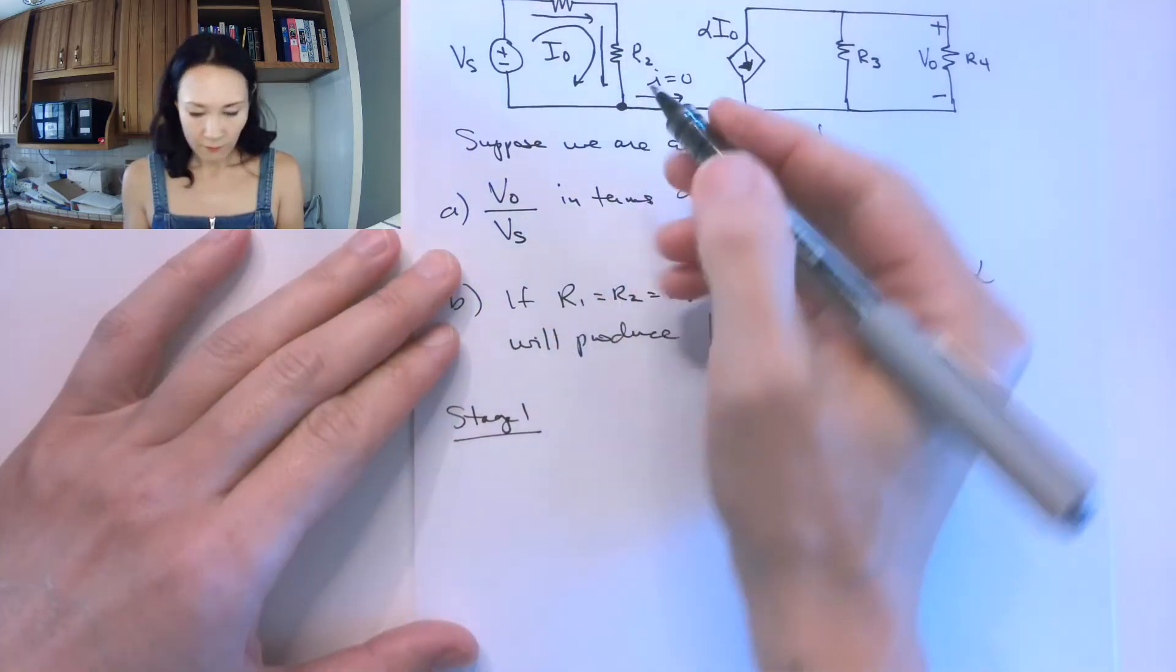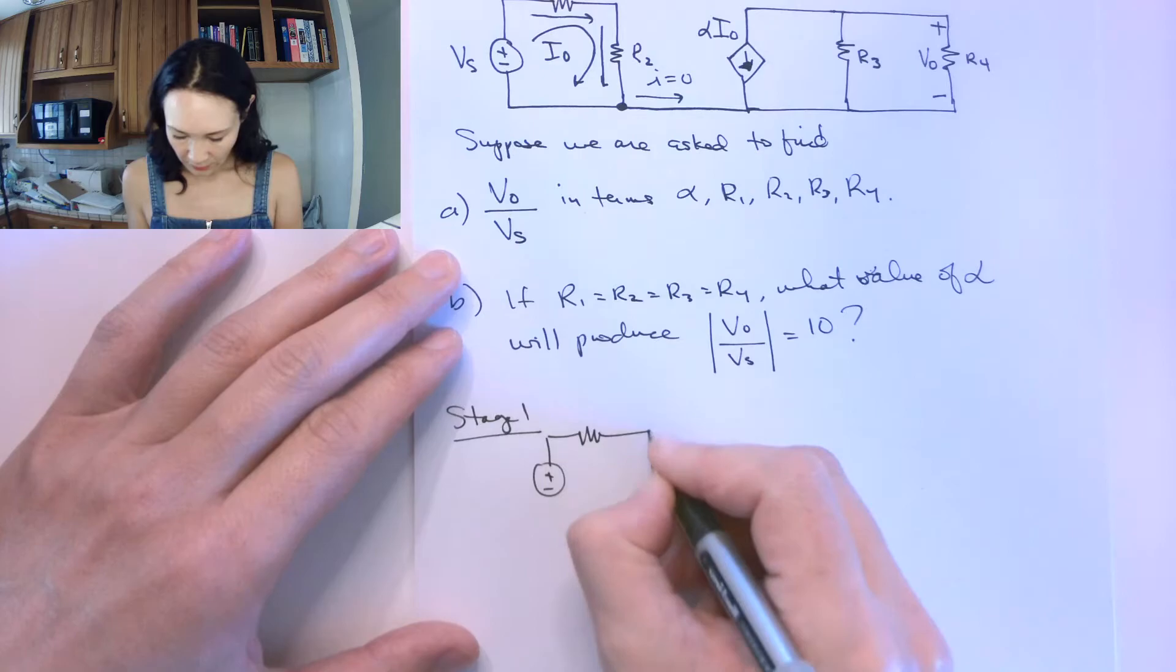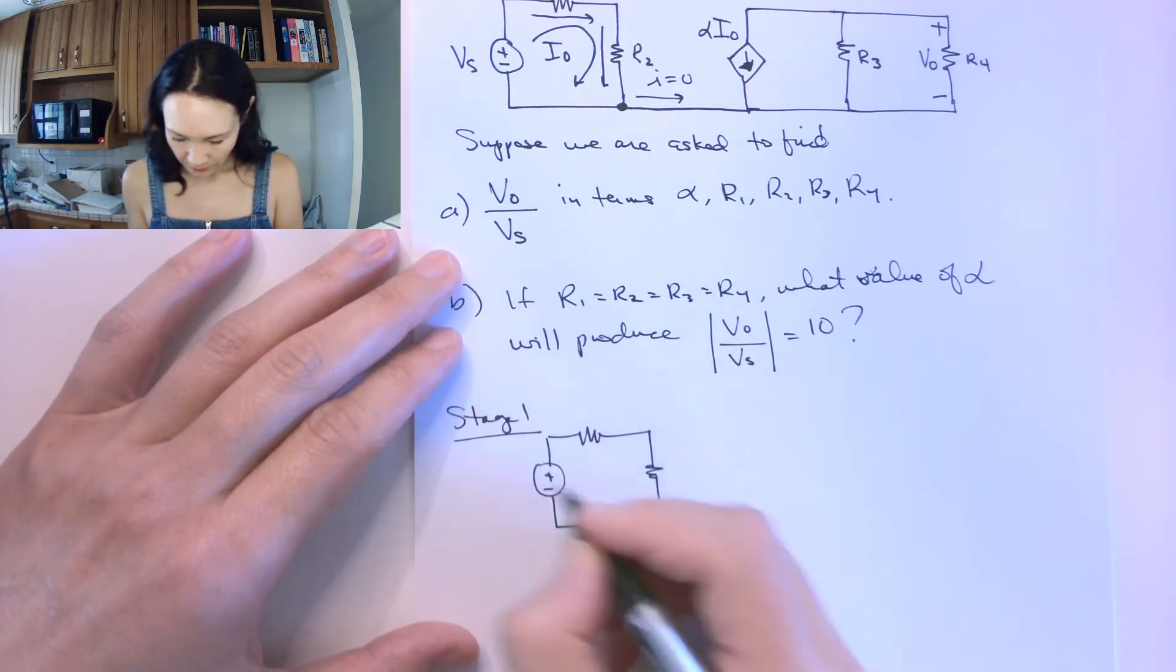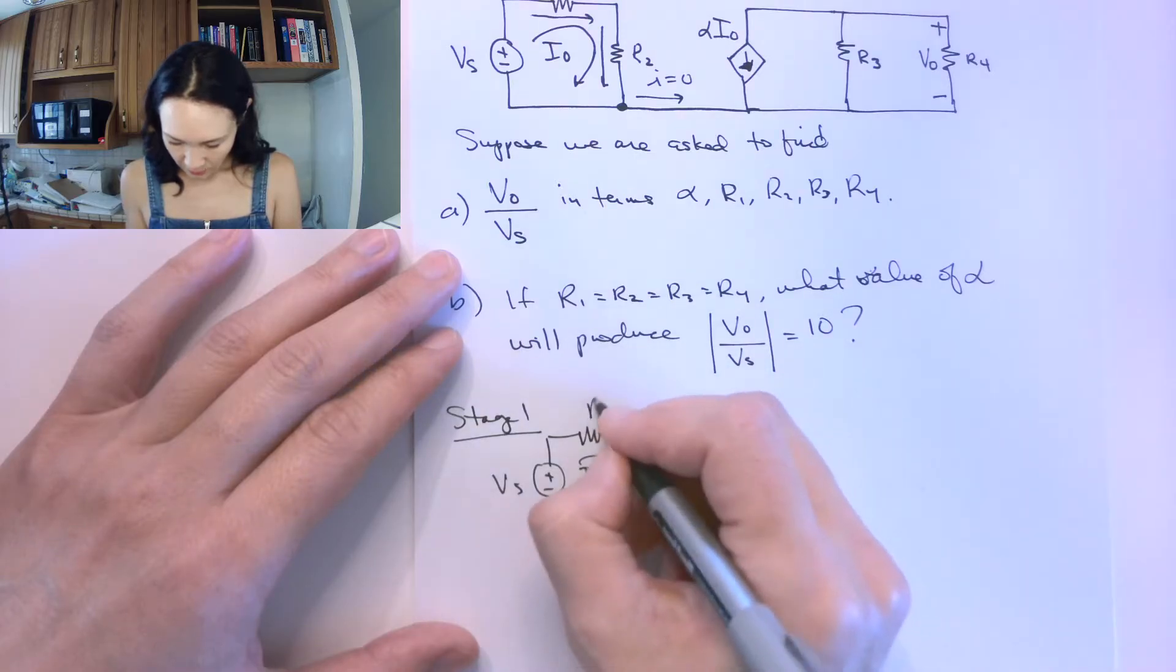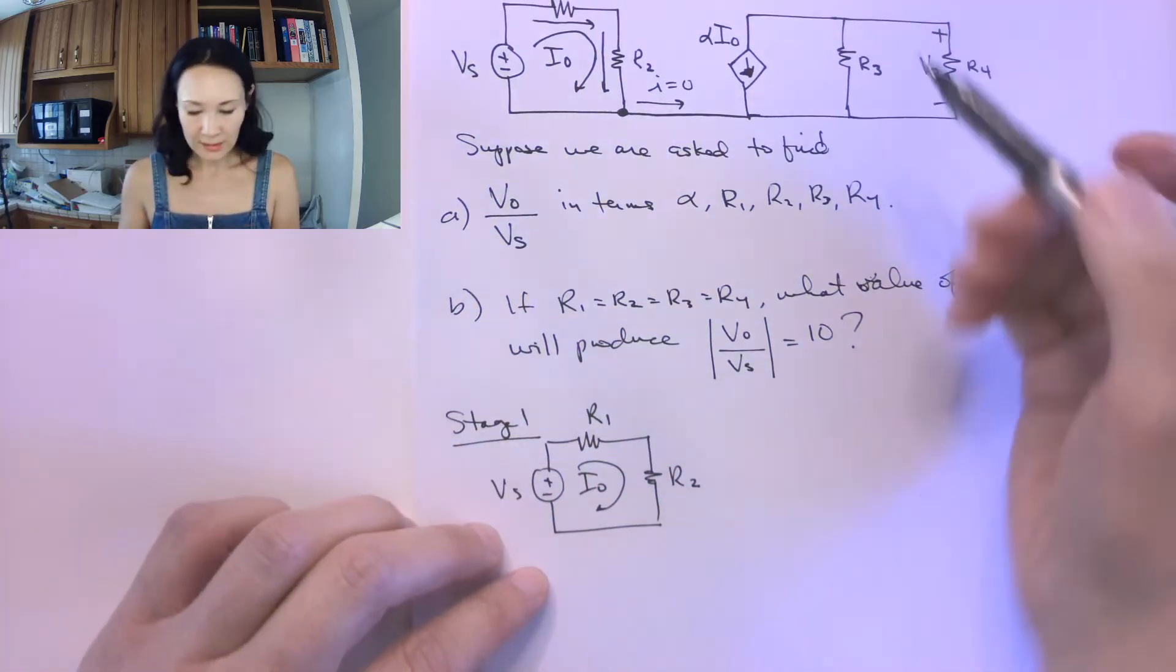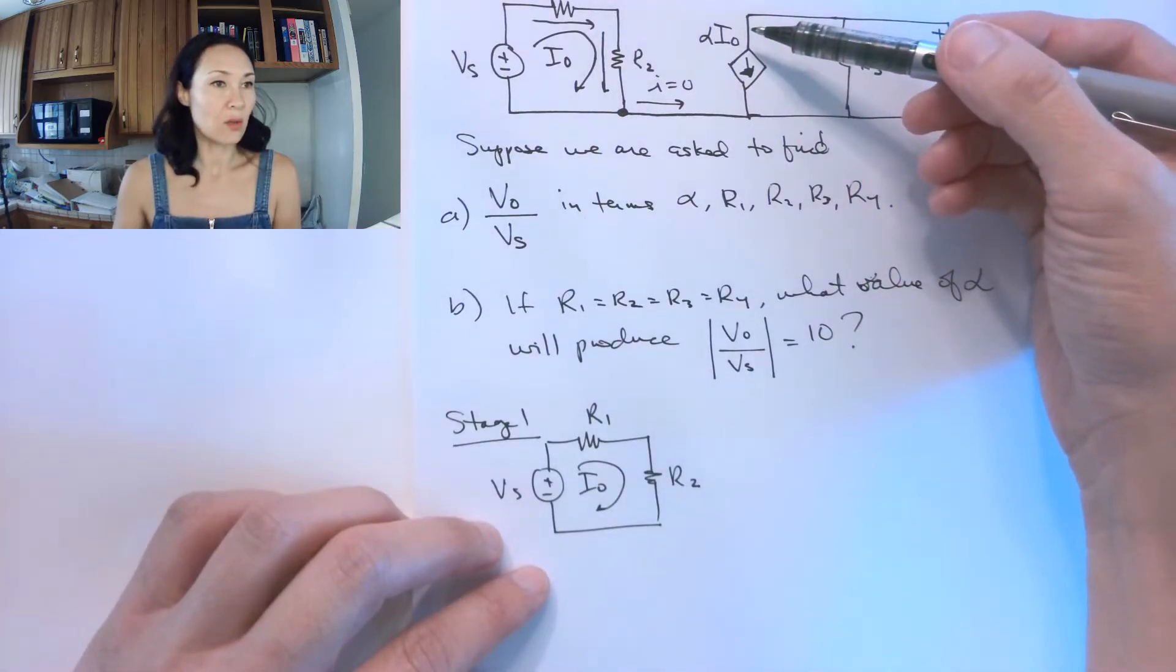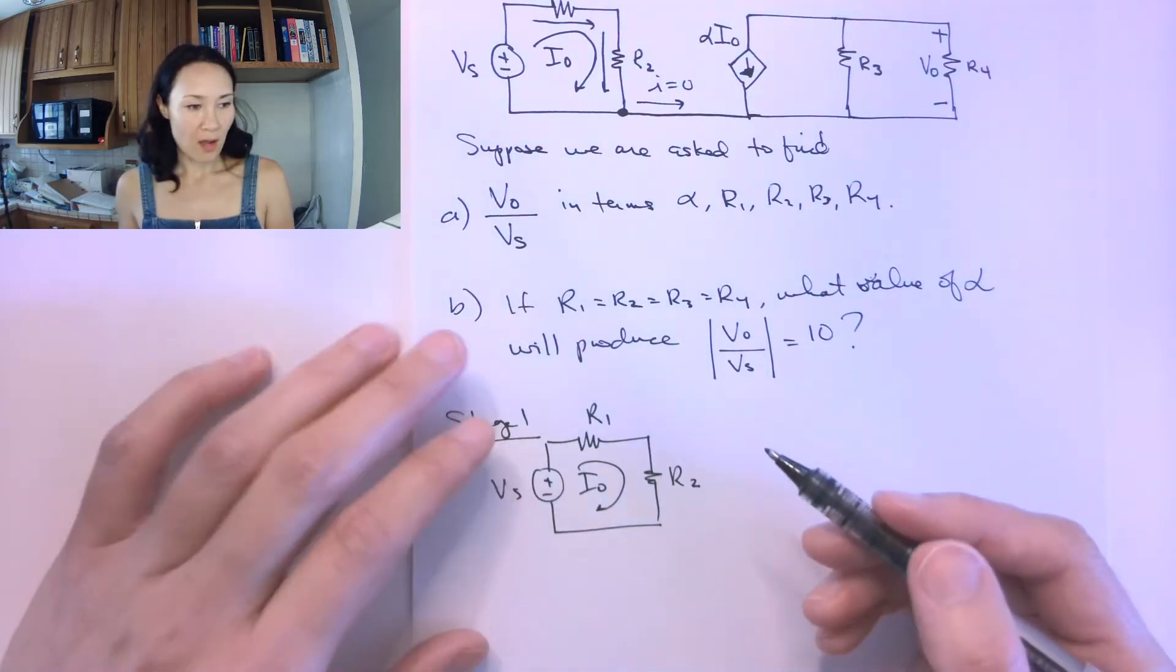The first part of our circuit is just this simple series circuit with two resistors. We have Vs, we have I0, we have R1, we have R2. We know in stage two we're going to need to know what this I0 is, so let's find that I0.